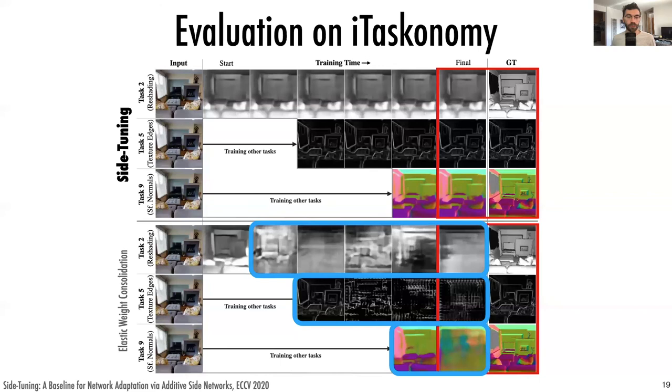In the more complex setting, forgetting is a significant problem for many existing approaches, and methods that work well in iTaskonomy show increasing rigidity on the more diverse tasks in iTaskonomy. Side-tuning beats state-of-the-art approaches, and it does better on harder datasets.